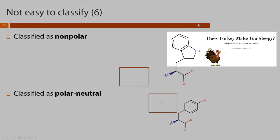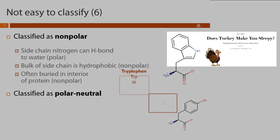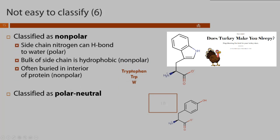Tryptophan is classified as nonpolar because it has a big bulky aromatic side chain called an indole; three-letter code TRP, one-letter W. However, the indole has a nitrogen bonded to a hydrogen, so even though the majority of the large tryptophan side chain is hydrophobic, the NH can act as a hydrogen bond acceptor or donor and can interact with water.